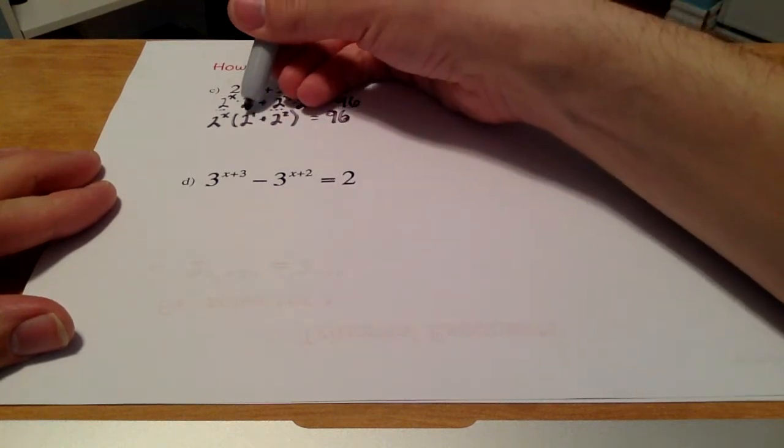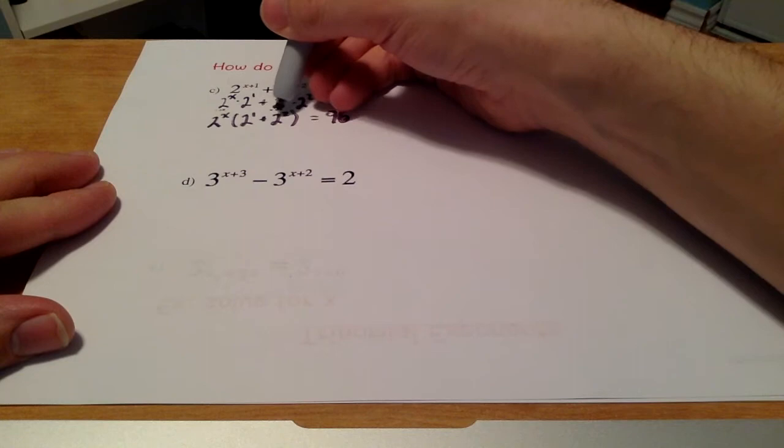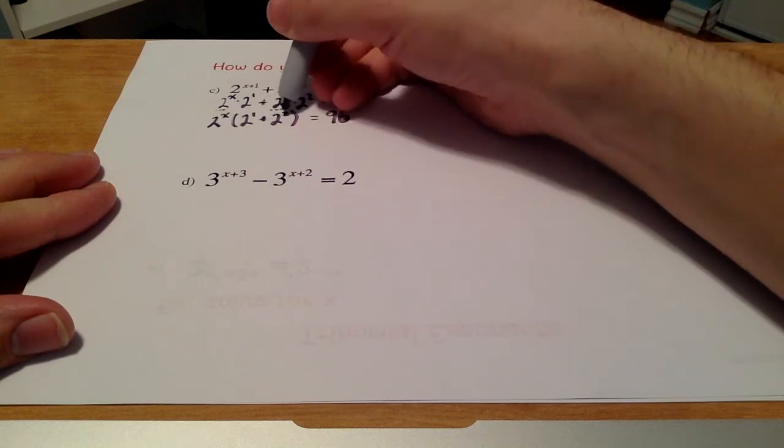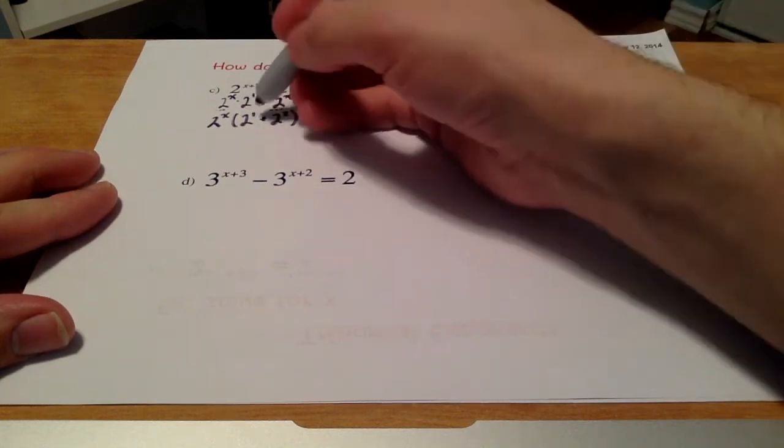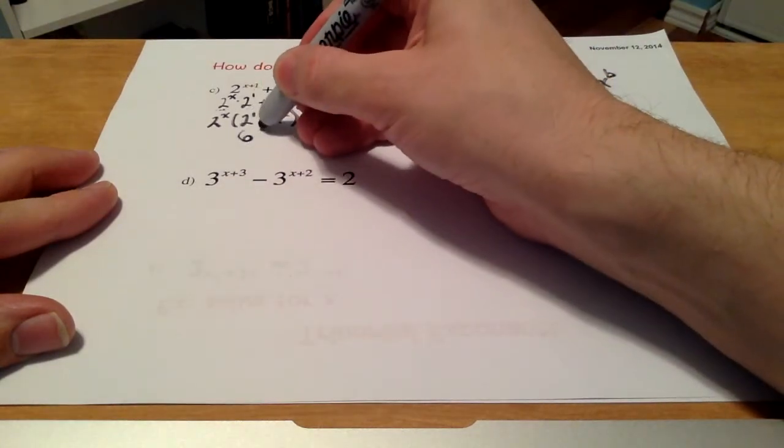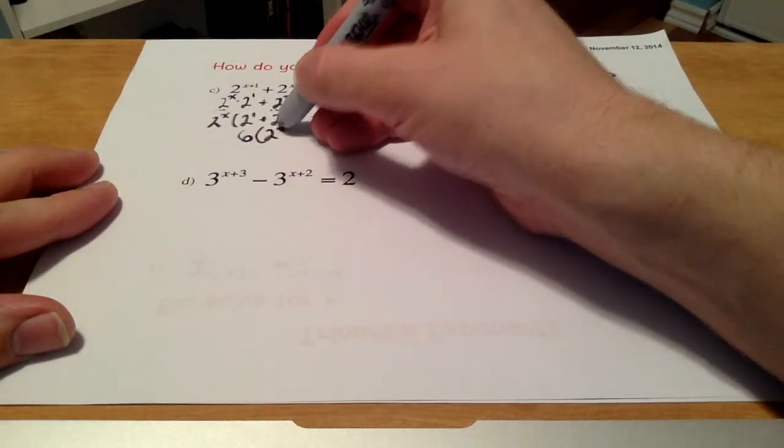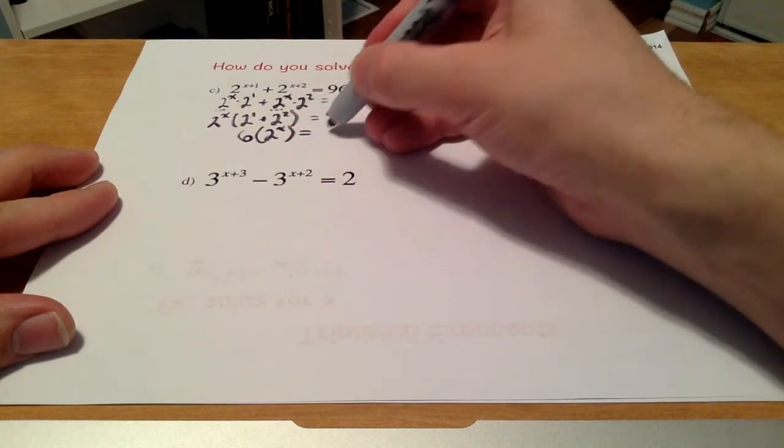Now, I know that 2 to the power of 1 is 2, and 2 to the power of 2 is 4. So if I add 4 and 2, I get 6. So what I've got is 6 times 2 to the power of x. And I'm just rewriting that in a form that we're used to.